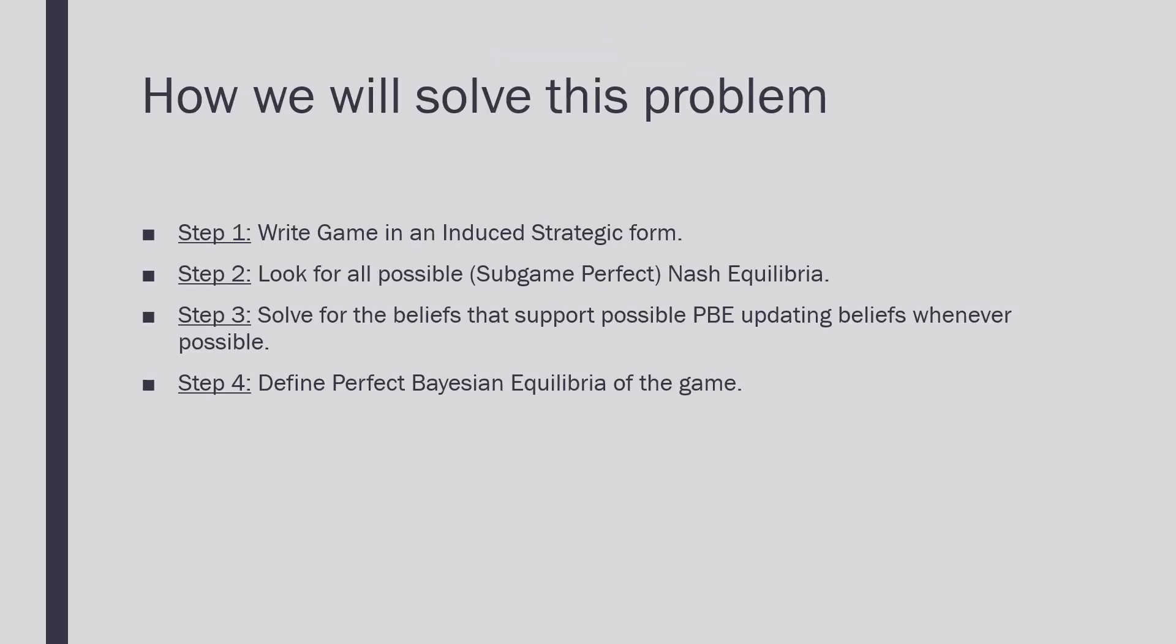As before, we're going to follow four steps for solving our Perfect Bayesian Equilibrium. We're going to write this game in an Induced Strategic Form, then look for all Subgame Perfect Nash Equilibria, solve for the beliefs that support our Perfect Bayesian Equilibrium updating those beliefs whenever possible, and lastly define our Perfect Bayesian Equilibria of this game.